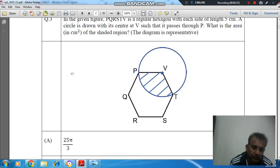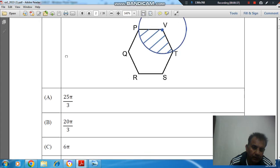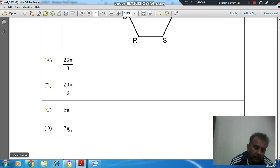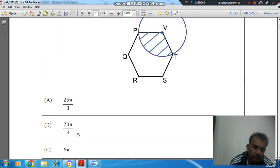Option A: 25π/3. Option B: 20π/3. Option C: 6π. And option D: 7π.